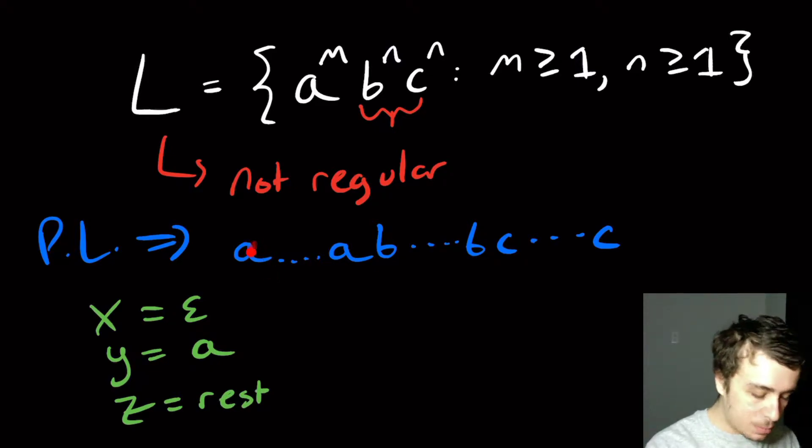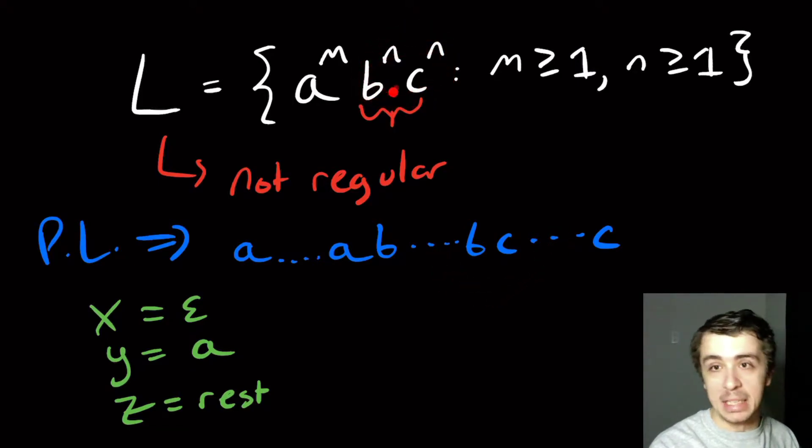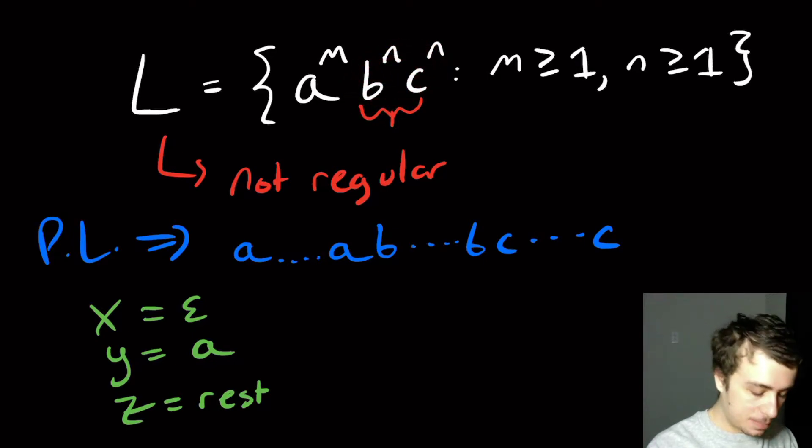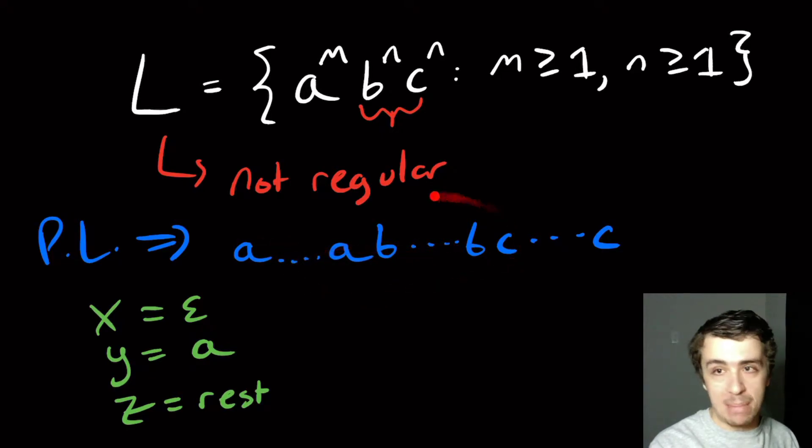Then what will happen is, no matter what we do, whether we pump up or down, we will change the number of a's, but we will not change the number of b's and c's. And the only real requirement of being in this language is that we have the same number of b's and c's. And so, no matter what string you pick, it must be of this form because you must pick at least one a, according to the definition.